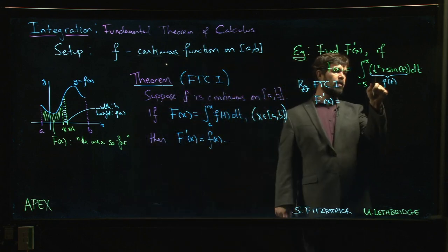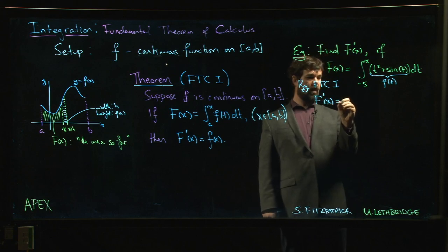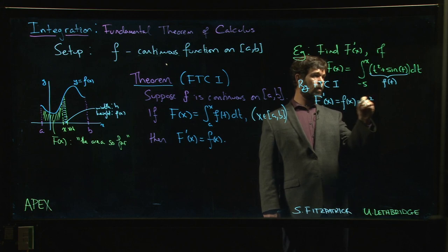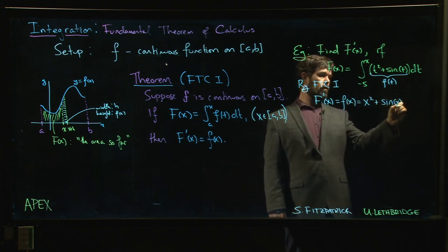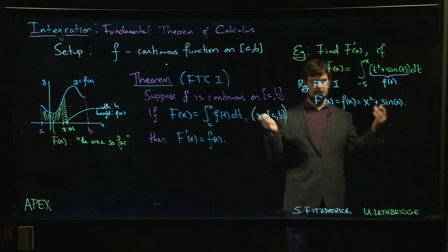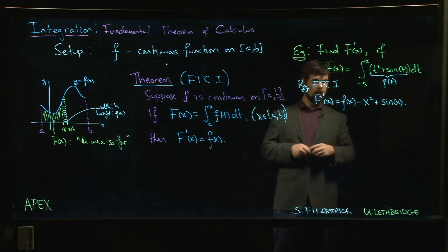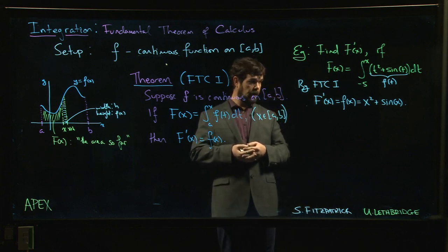So all you're doing is replacing t by x. So f of x is x squared plus sine x. That's it. You're done. There's no more to it than that. You stop at that point.